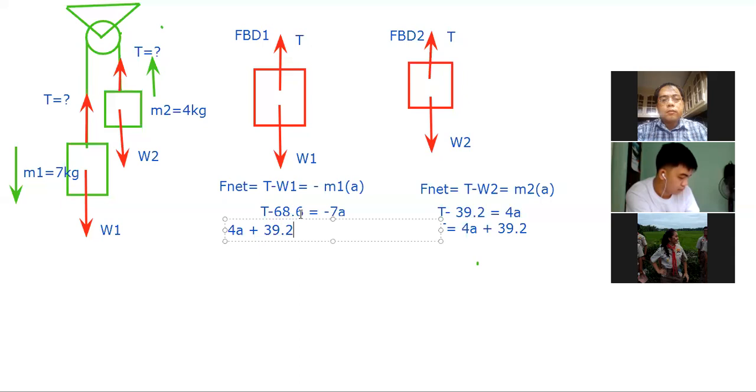Minus 68.6 equals to negative 7A. Again, we substituted T. So these are T value, and we added negative 68 and then negative 7A. Do you follow?